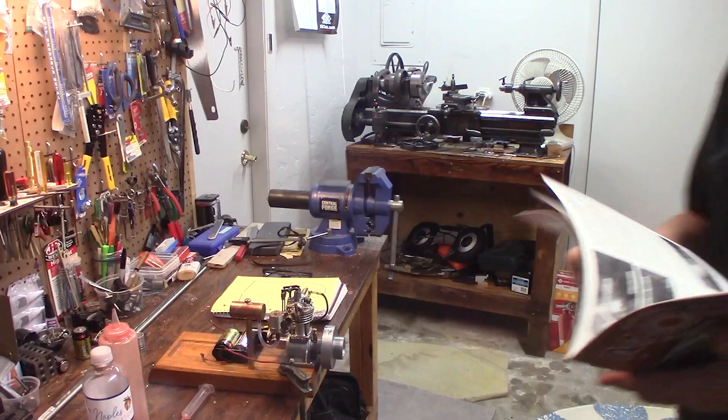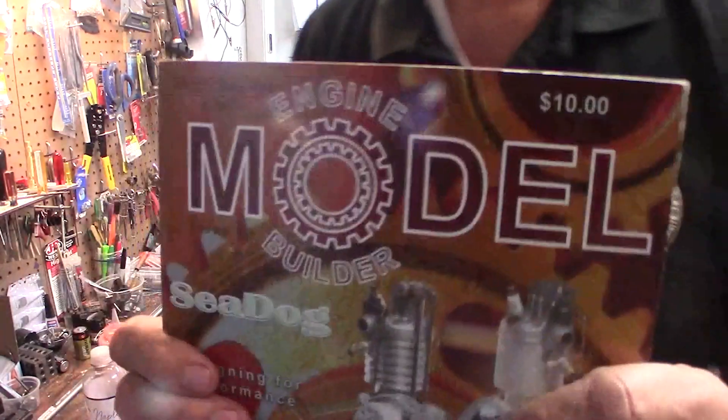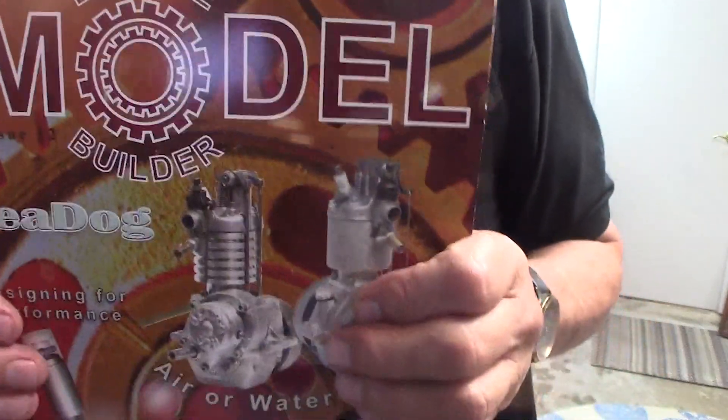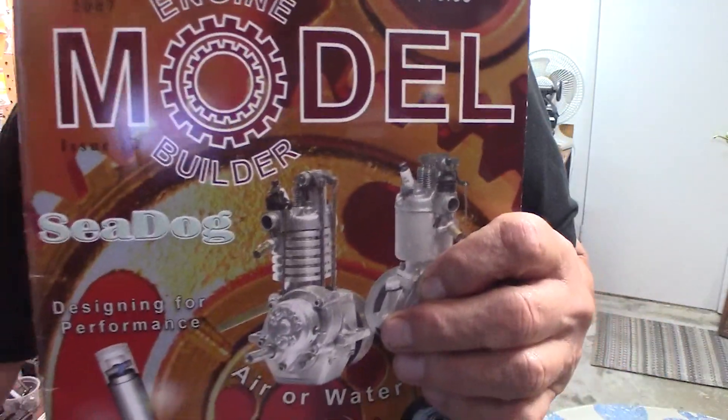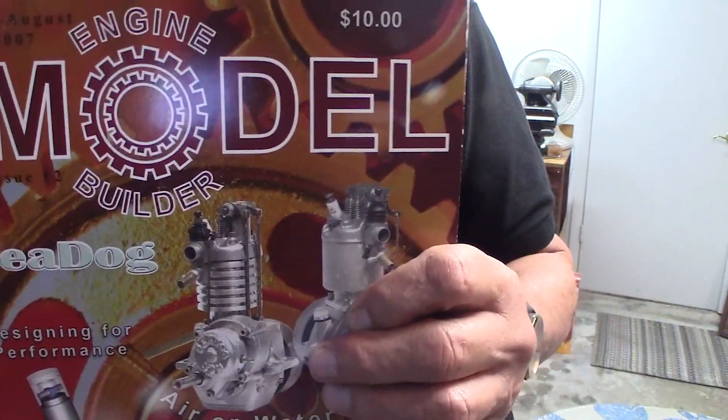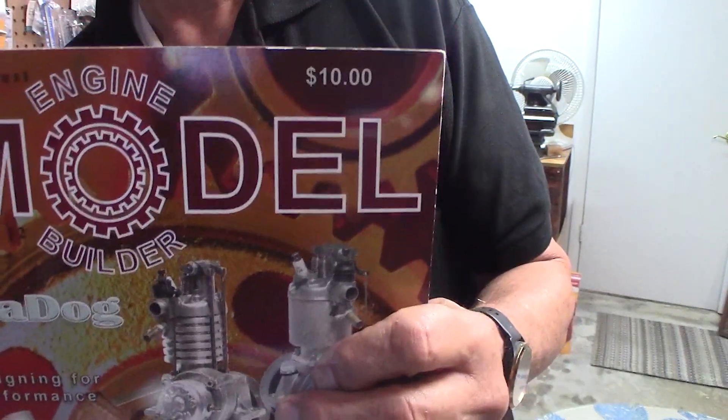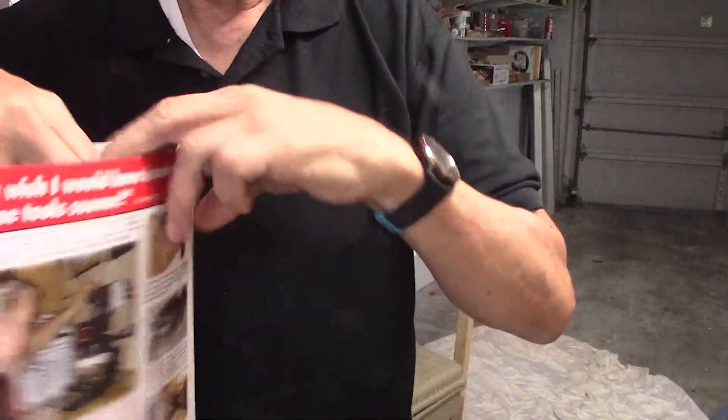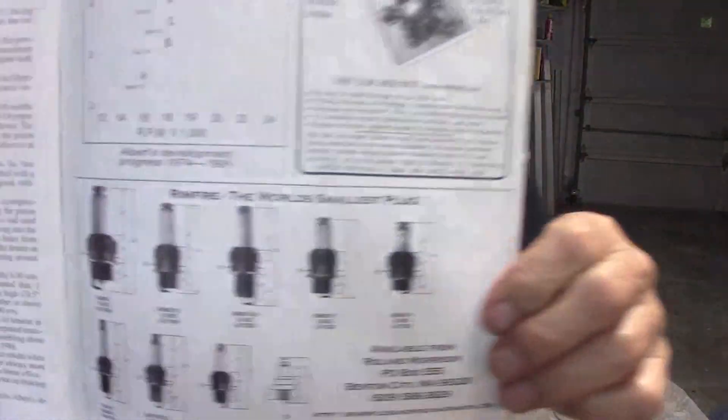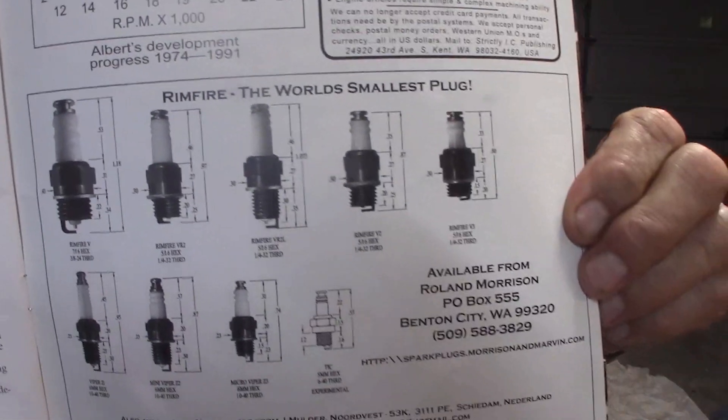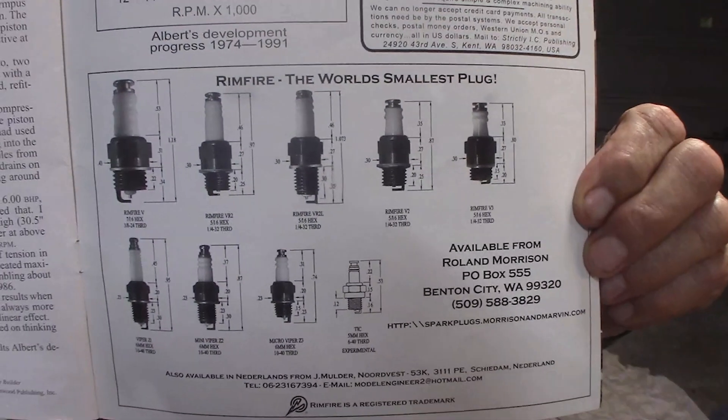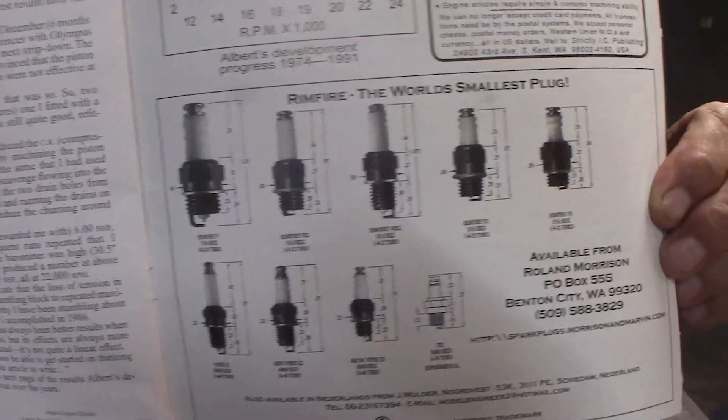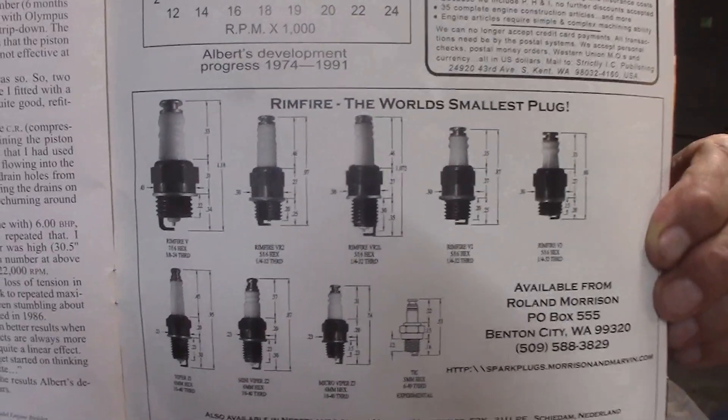Another book that's great for information - this is online now - is Model Engine Builder magazine. This is an online magazine. In Model Engine Builder magazine I found an ad for the miniature spark plugs, the Rimfire.